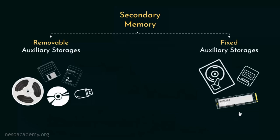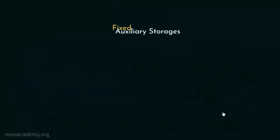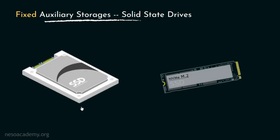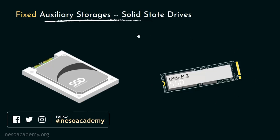In this session, we will observe the last type of fixed secondary storages, that is the solid state drives. Now solid state drives or SSDs are available in two different form factors: the 2.5 inch form factor and the M.2 form factor. Now unlike the hard disk drives, SSDs do not have any moving parts and therefore these are very quiet and more efficient in terms of power consumption.